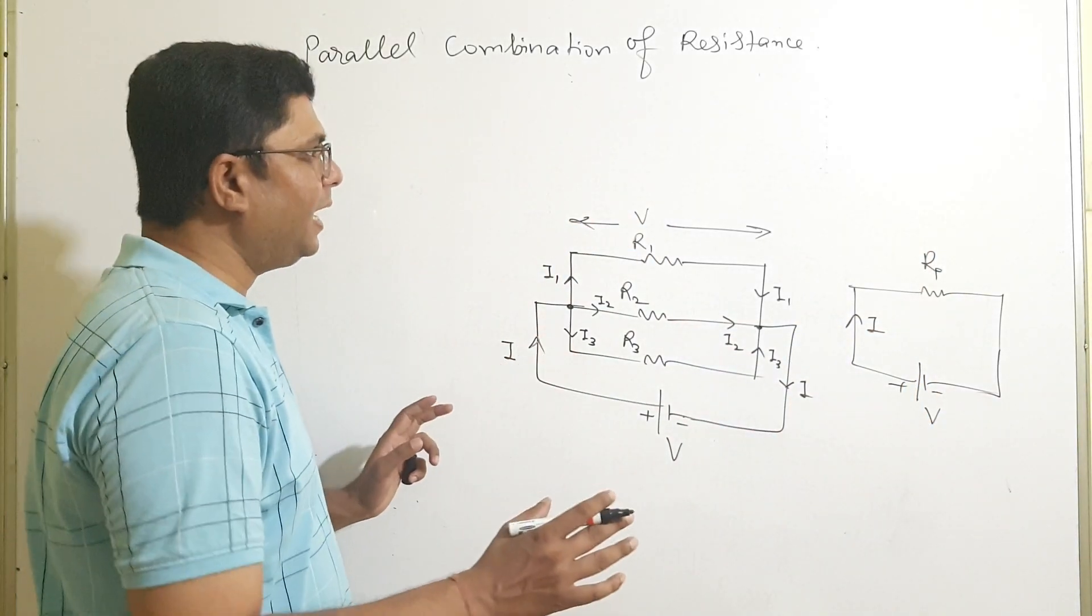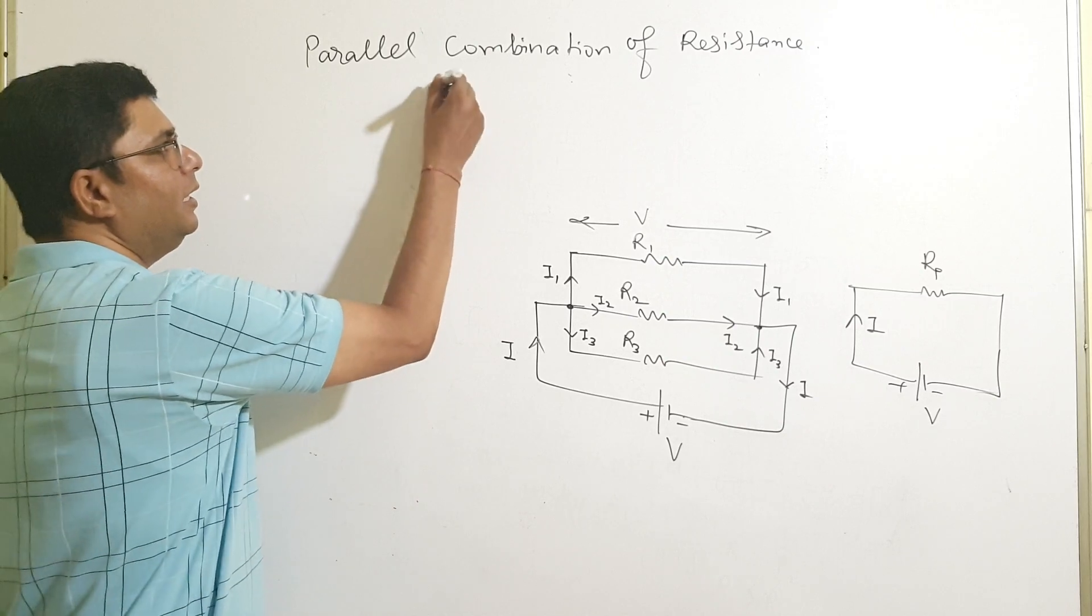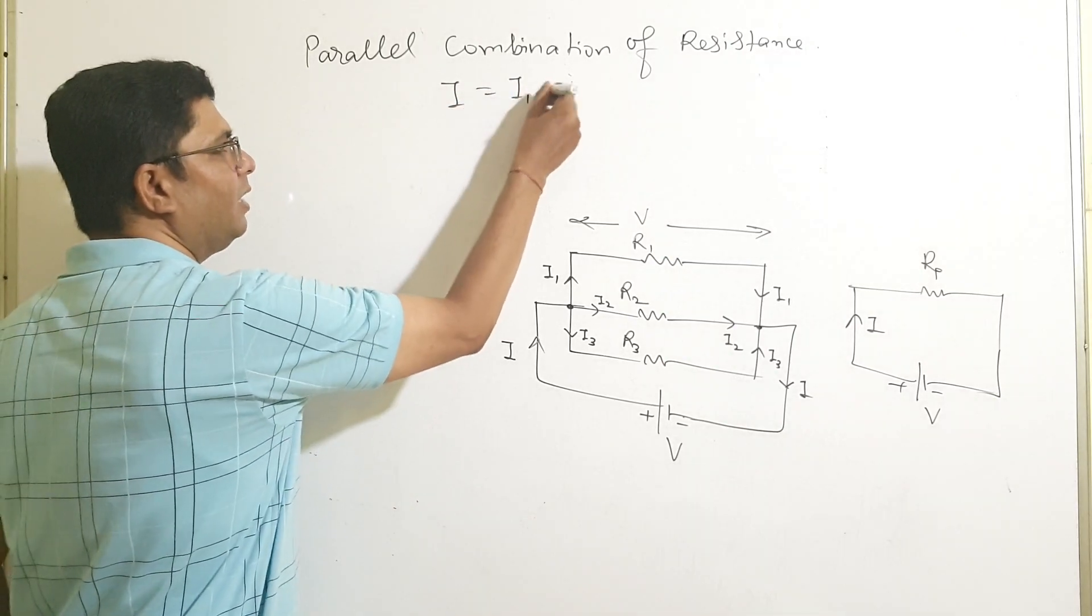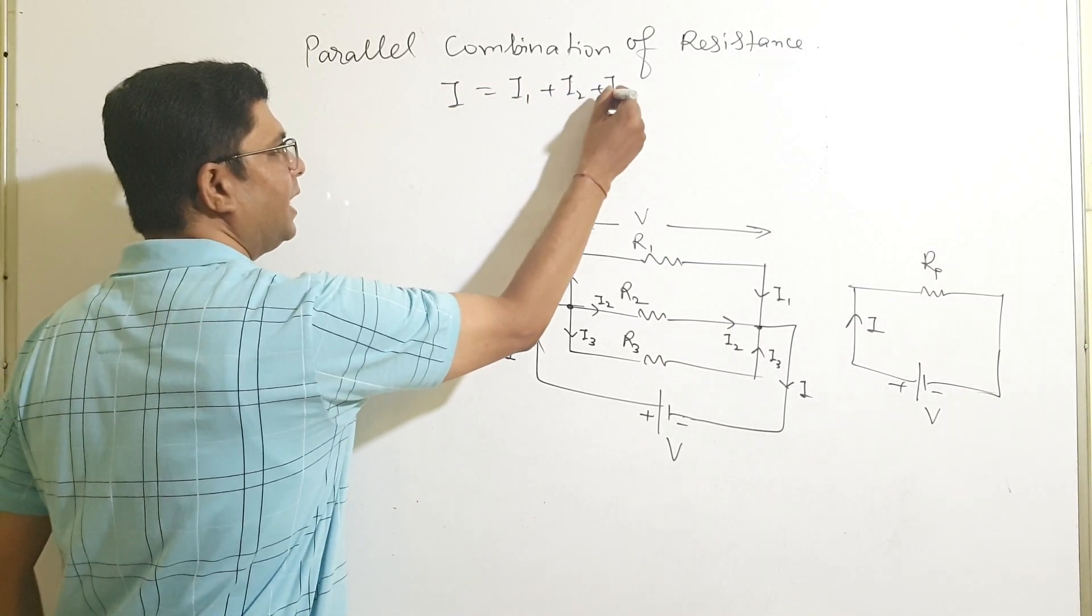And as we have seen that the current, current I is equal to I1 plus I2 plus I3.